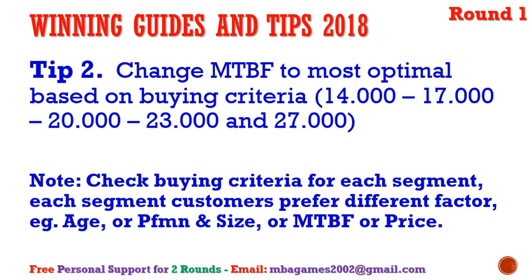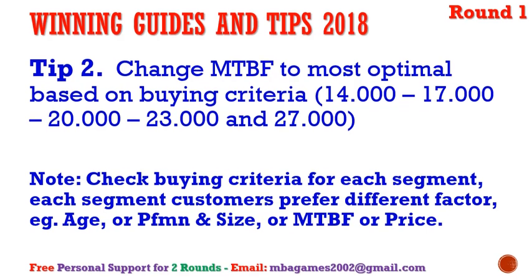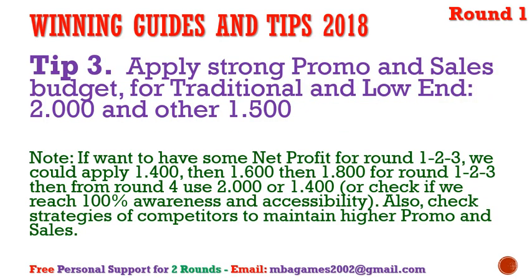Tip number three: apply strong promotion and sales budget — about $2,000 for traditional and low-end, and $1,500 for others. But if you want good net profit right from rounds one and two, you can reduce that to $1,500 for traditional and low-end and about $1,200 for others, because in the first few rounds net profit is only a few million.